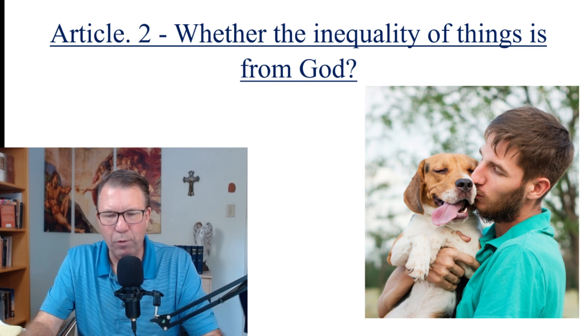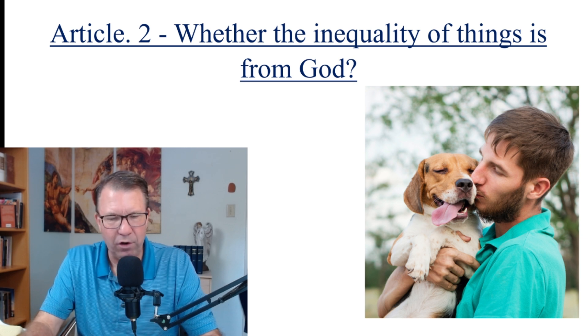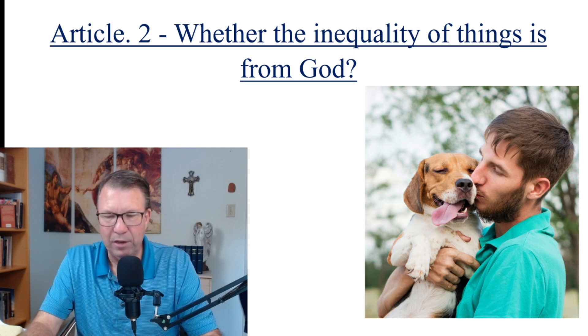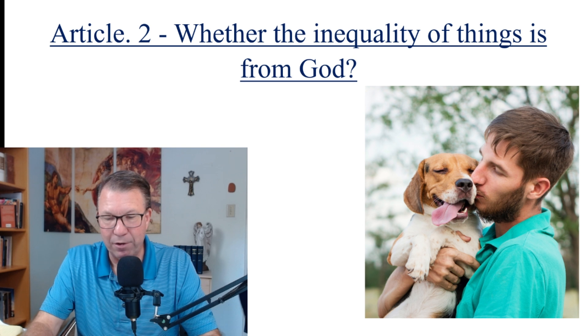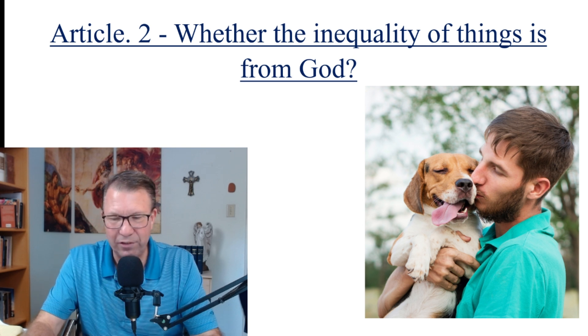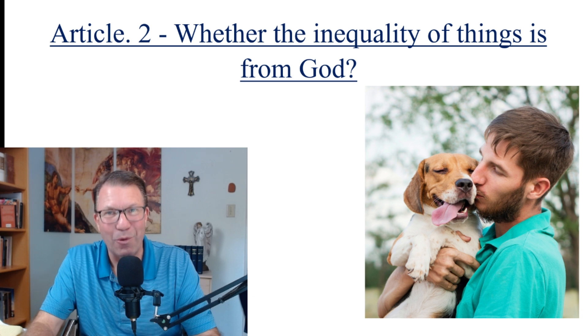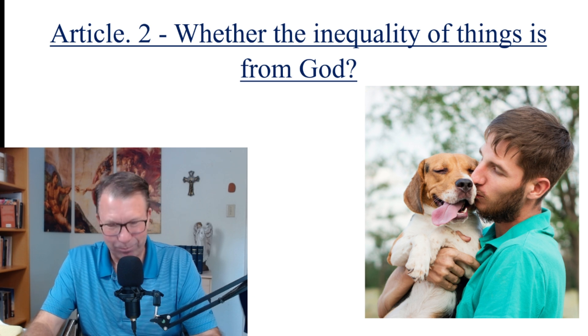And so Augustine says, what can be more foolish than to say that the divine architect provided this one sun for the one world not to be an ornament for its beauty or for the benefit of corporeal things, but that it happened through the sin of one soul so that if a hundred souls had sinned, there would be a hundred suns in our world. Isn't that great?